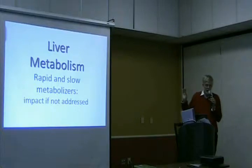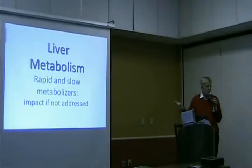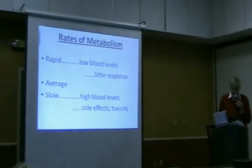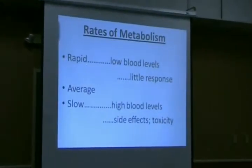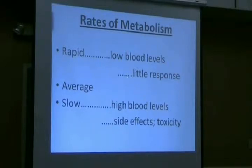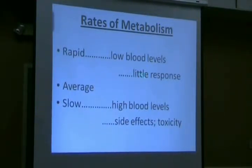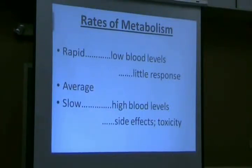I can't overemphasize this — a lot of times this is what accounts for success or failure. Looking at rapid metabolizers: low blood levels and little response to normal starting doses. There's probably a standard distribution — maybe 5% or less on each end. There are also ethnic differences. Most people fall somewhere in between, but slow metabolizers taking even relatively low doses will immediately get high blood levels, lots of side effects, or maybe even toxicity.